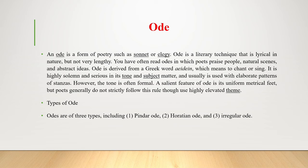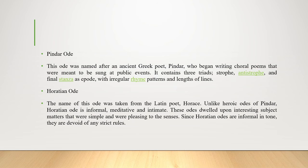Odes are of three types: Pindaric ode, Horatian ode, and irregular ode. The Pindaric ode was named after the ancient Greek poet Pindar, who began writing choral poems meant to be sung at public events. It contained three parts — strophe, antistrophe, and final epode — as a pod with irregular rhyme patterns and varying line lengths.